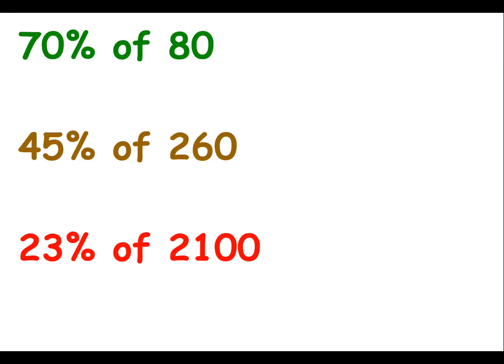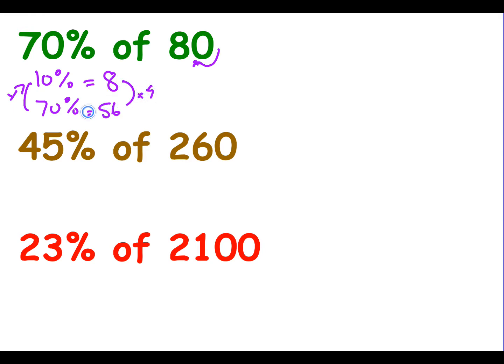Have a go at these three. So 70% of 80: using our 10% rule, 10% of 80 is 8. To get 70% I multiply 8 by 7, which is 56. So 70% of 80 is 56.